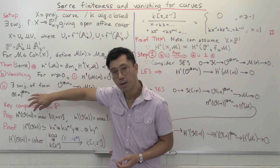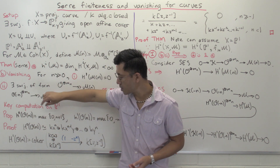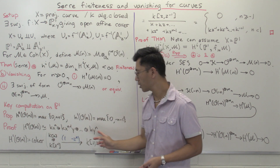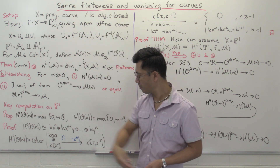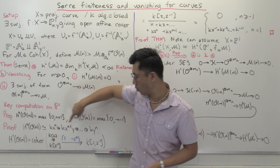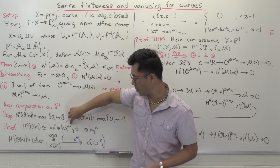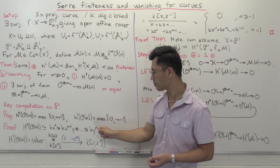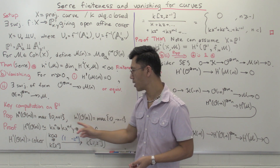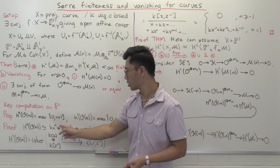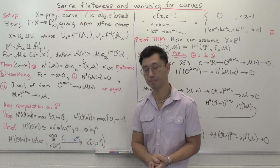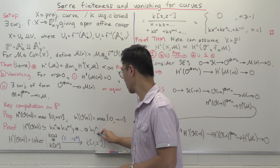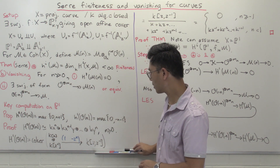We computed in the playlist on the user's guide to coherent sheaves what the global sections of O(n) on P1 are. If x and y are your homogeneous coordinates on P1, you have all the degree n forms in x and y — basically linear combinations of x^n, x^{n-1}y, all the way up to y^n. The number of these is n+1, except when n is negative, in which case you take 0.